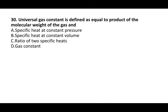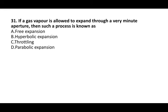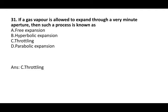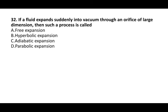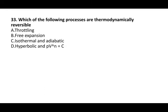Next question: the universal gas constant is defined as equal to the product of the molecular weight of the gas and the gas constant. Next question: if a gas or vapor is allowed to expand through a very minute aperture, that process is known as throttling. If a fluid expands suddenly into a vacuum through an orifice of large dimension, that process is called free expansion. Next question: which of the following processes are thermodynamically reversible? The answer is isothermal and adiabatic.